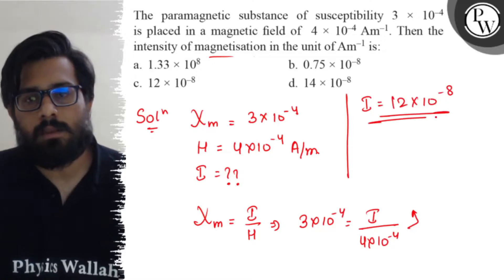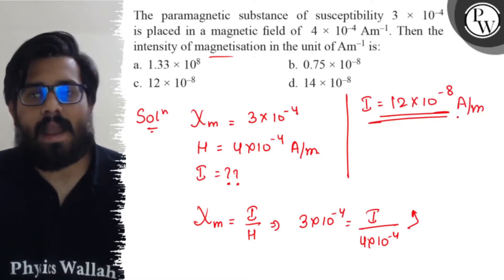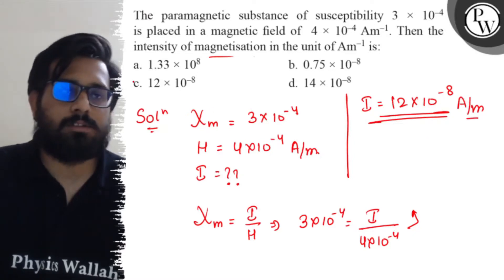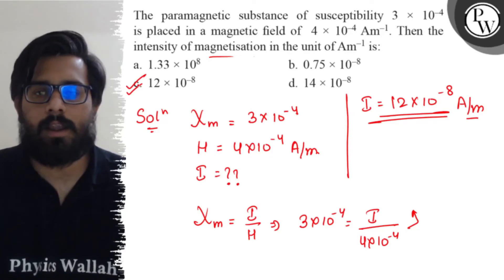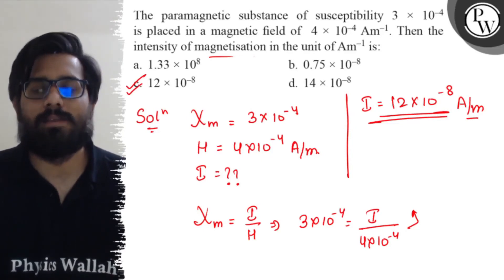The unit is ampere per meter, so the intensity of magnetization I = 12×10^-8 A/m. The correct answer is option (c). I hope you got the concept of this question.